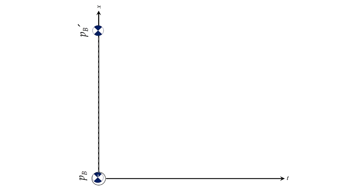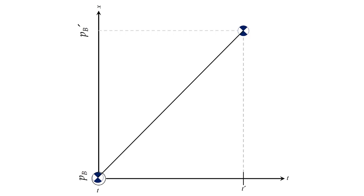So we have to adjust our graph and put the position at time prime at a different point in time, T prime. Now we have an appropriate graph where runner B is in two different positions at two different points in time. Drawing a line from one position to the next, the slope of this position-time curve ends up being the velocity of runner B.